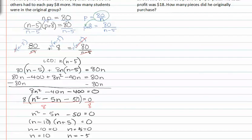When I substitute this back into my original equation, I see that n equals negative five would not work, because that's a negative number of students. So there were ten students originally.